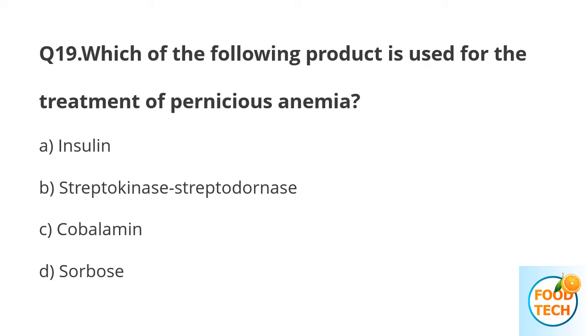Question 19. Which of the following products is used for the treatment of pernicious anemia? A. Insulin. B. Streptokinase. C. Cobalamin. D. Sorbose.